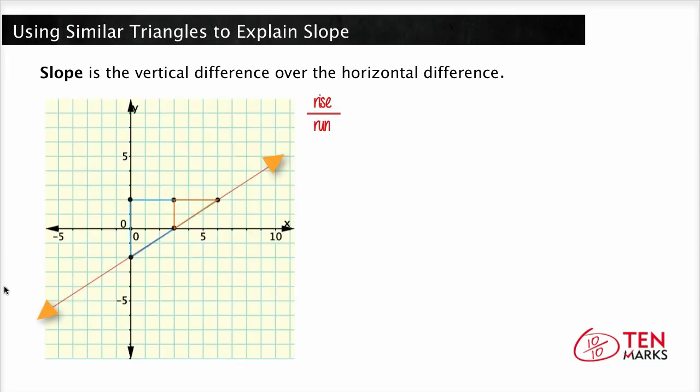Take a look at this graph below. There is one line and two right triangles on the line. The height of each triangle over its base is the same as the vertical difference over the horizontal difference.